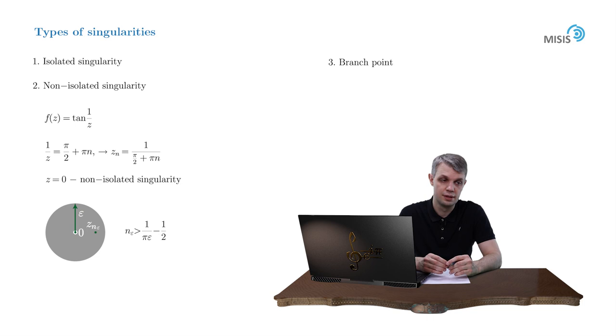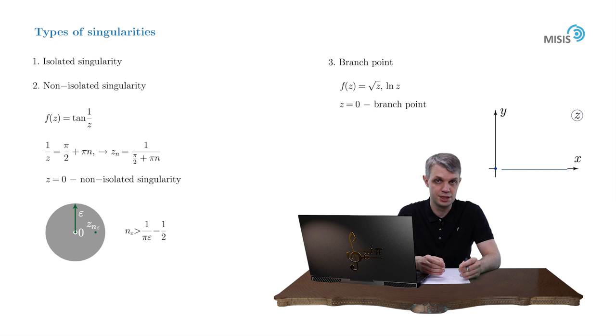And now the branch points. The branch points are usually counted when we deal with multi-valued functions, for example, square root of z or the logarithm of z. For these functions, z = 0 is a so-called branch point. We'll study them comprehensively in week 4 of our course. But for now, we'll just say that to make your function single-valued, you always need to draw a cut in the complex plane, and this cut should always start at a branch point. We'll elaborate on this further in our future lectures. But for now, I think that's it, and good luck with your homework exercises.